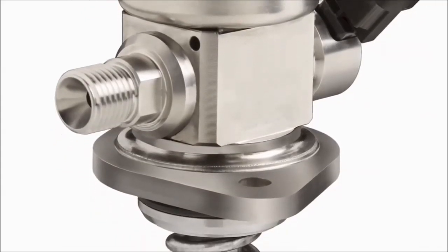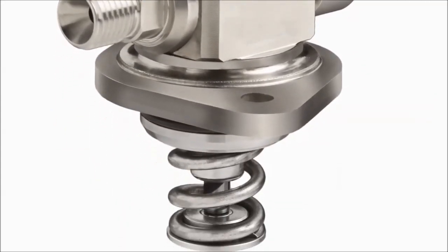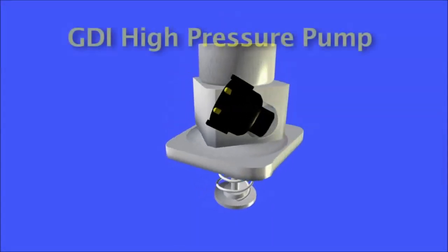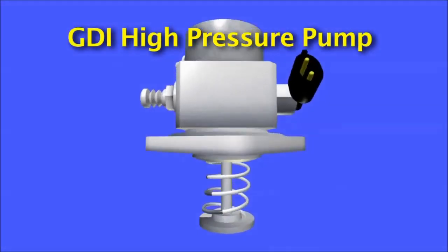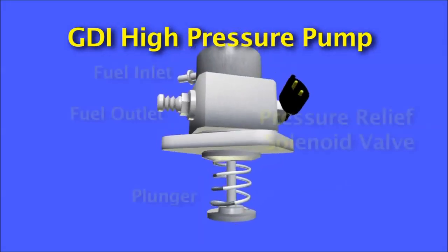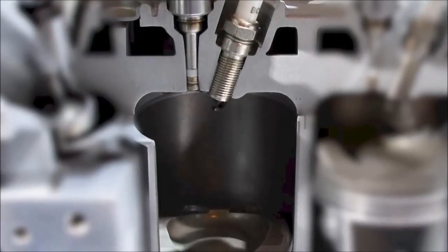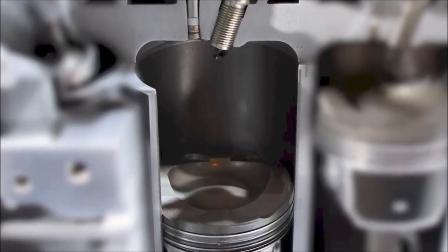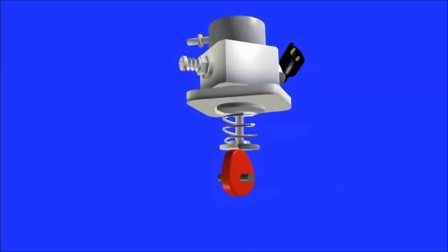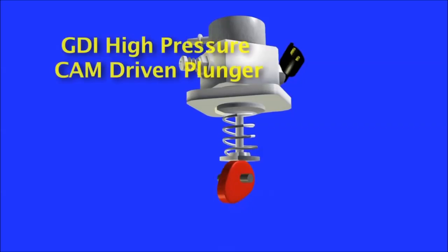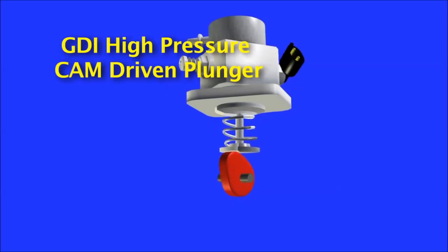The GDI high pressure pump is a compact high pressure single piston pump. It is equipped with an internal pressure relief valve to limit the maximum fuel pressure. It also has an integrated demand electronic solenoid control for metering the amount of fuel supplied into the high pressure fuel system. The GDI high pressure pump is driven by the camshaft itself. It can supply from 40 to 200 bar, or 100 to 2900 PSI — the actual output pressure is controlled by the ECM through the internal pressure relief solenoid.